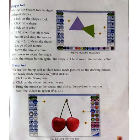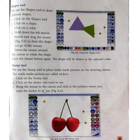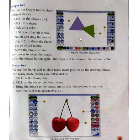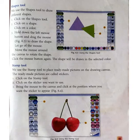Stamp tool: we use the Stamp tool to place ready-made pictures on the drawing canvas. The ready-made pictures are called stickers. Click on the Stamp tool. Click on the sticker you want to use. Bring the mouse to the canvas and click at the position where you want the sticker to appear. In Tux Paint, there are many different types of stamps. You can choose that ready-made picture — called a sticker — and draw it.